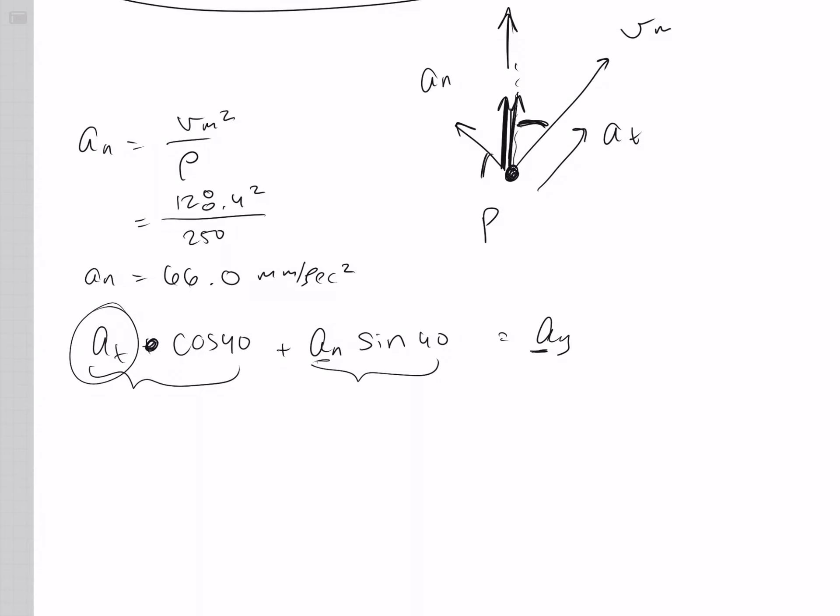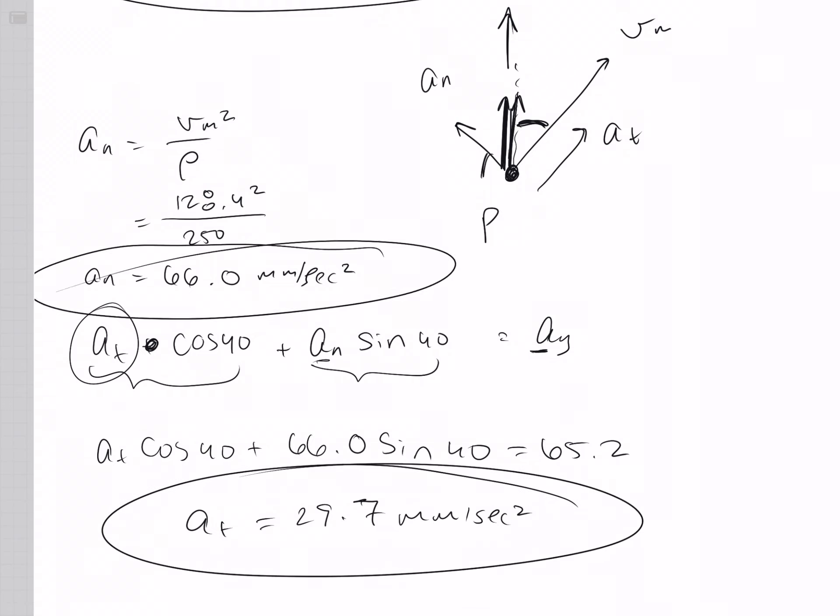Okay. So A of N, we solved for that, now let's solve for A of T. AT cosine of 40 plus AN sine of 40 equals 65.2. When you solve for that, you get AT of 29.7 millimeters per second squared. And now, we have calculated for both the normal and tangential.